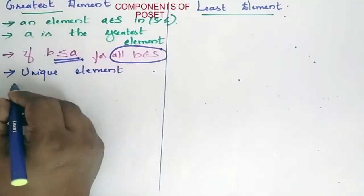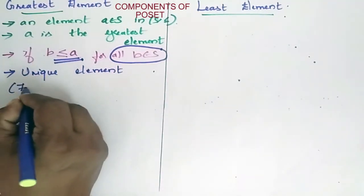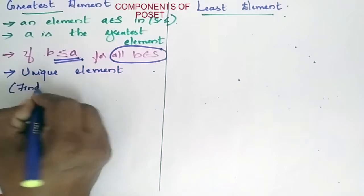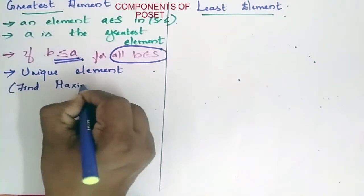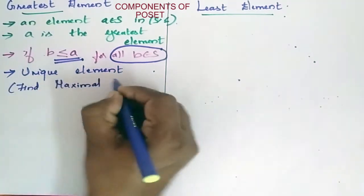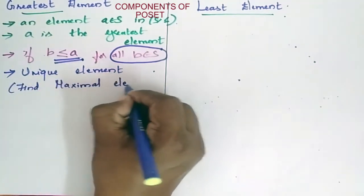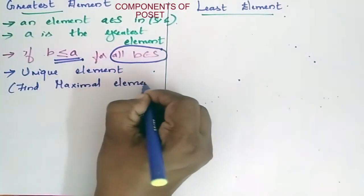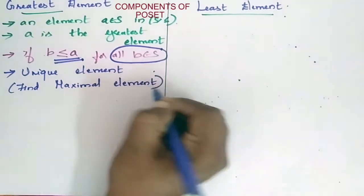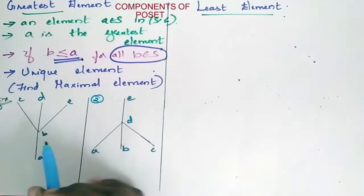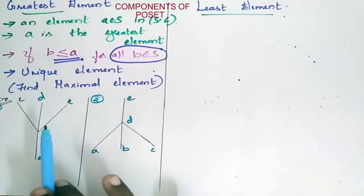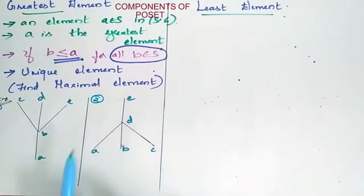To find the greatest element, first find the maximal element, and from that maximal element find the greatest. Now we will see this greatest element with two examples.